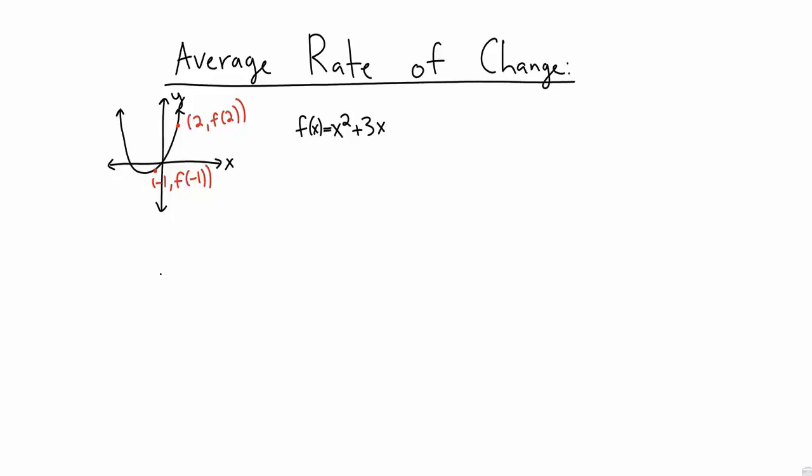Let's look at this quantity: f of 2 minus f of negative 1, over 2 minus negative 1. This is called the average rate of change of f from minus 1 to 2.